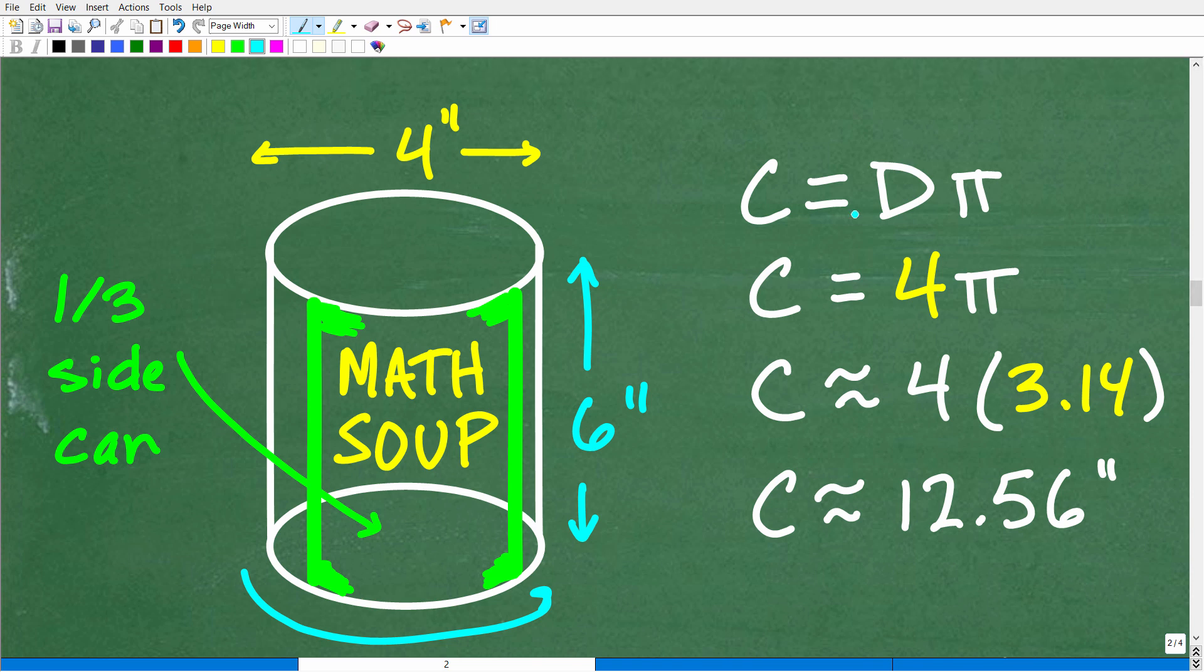So the circumference is equal to the diameter times pi, by the way, there is another formula for the circumference. It's two pi r, two times the radius times pi. Two times the radius is indeed the diameter or the width of a circle. So the circumference is going to be equal to diameter times pi. So the diameter here or the width is four. So four times pi.